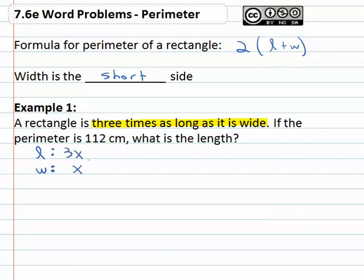The length is three times that, so that must be 3x. So if we add that together, there's a total of 4x's. That's adding the length plus the width, but we still need to multiply that by two to get the perimeter. So we'll multiply that by two, and that will equal our perimeter of 112.